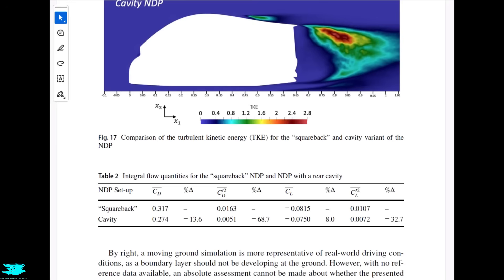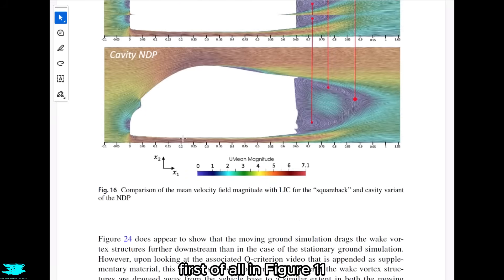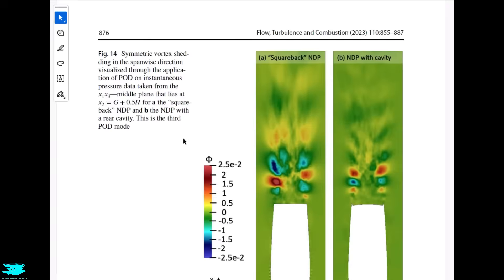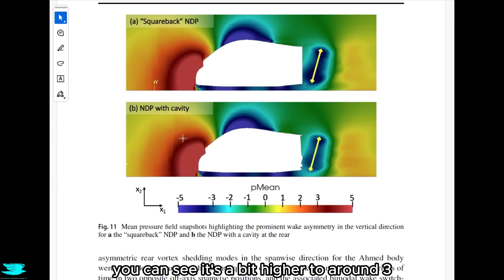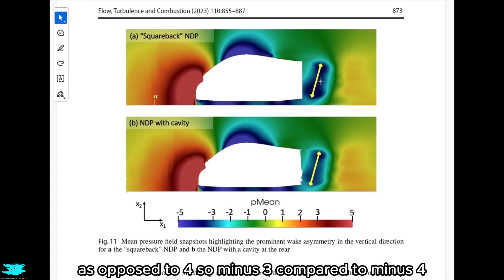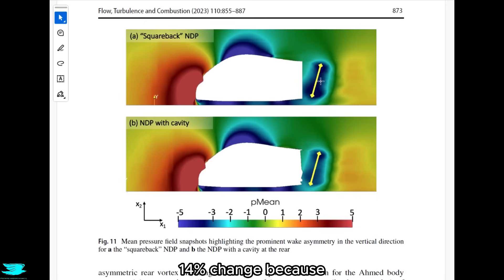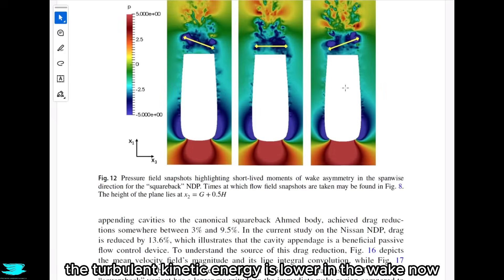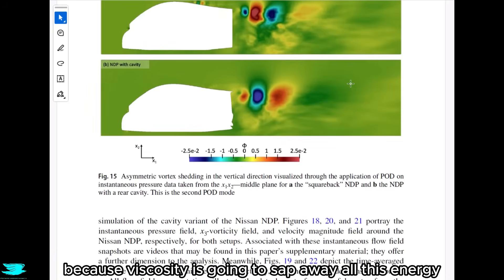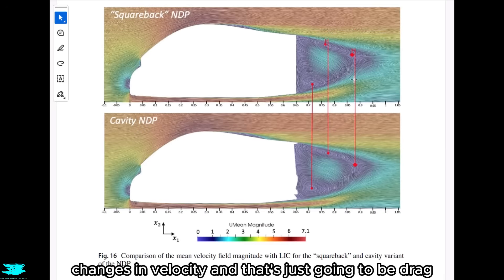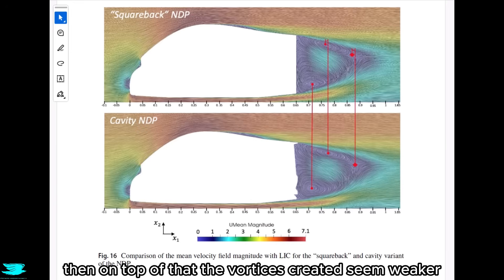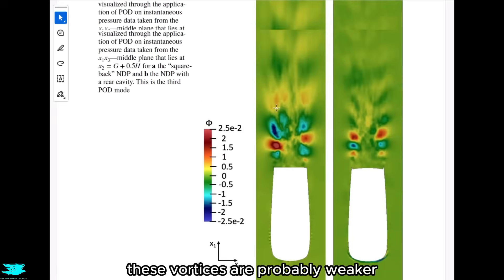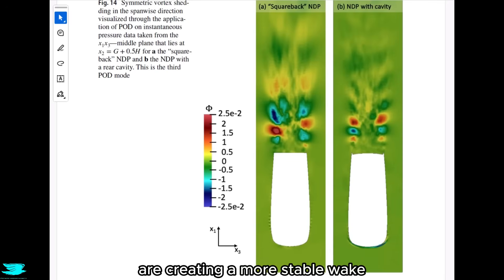So why is the drag lower overall? From the figures, first, in figure 11 the pressure is higher in the wake with extensions — around minus 3 compared to minus 4 — and that alone could account for much of the 14% change, since the wake accounts for so much of a car's drag. In addition, the turbulent kinetic energy is lower in the wake, reducing drag production via viscosity. On top of that, the vortices created seem weaker, lowering vortex drag. So there appear to be a few mechanisms involved in lowering the drag of this car.